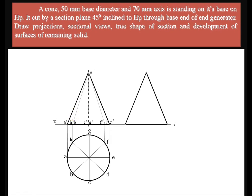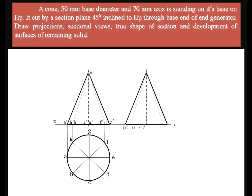Now look at the left side view. When you look at the object from the left, the height and shape will be equal to the front view, since it is a cone — you will see a right triangle on every side, with base equal to the diameter and height equal to the axis (70 mm). Represent the generators in the left side view according to the distances between A', H', B', E', F', and D' in the front view.